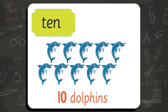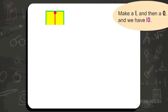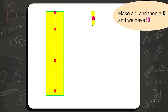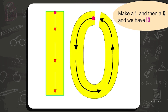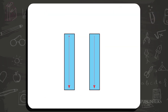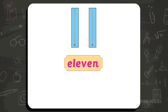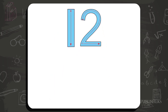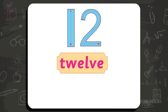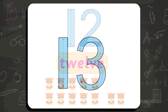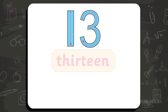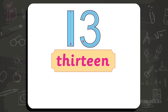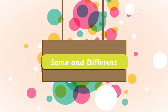Ten — ten dolphins. Make a one and then a zero, and we have ten. Eleven. Twelve — T-W-E-L-V-E. Twelve. Thirteen — T-H-I-R-T-E-E-N. Thirteen.